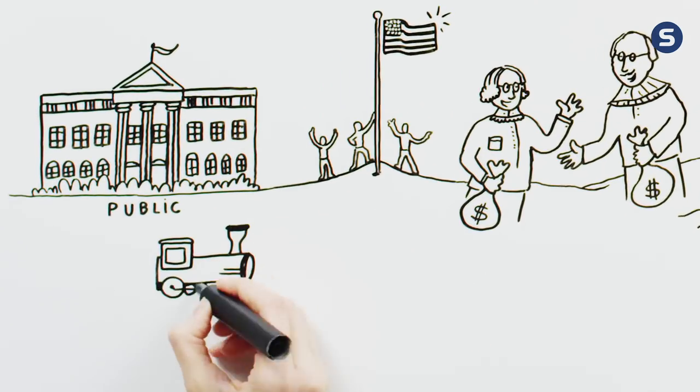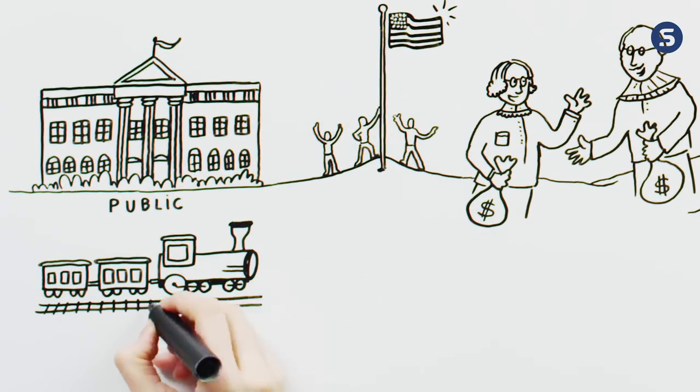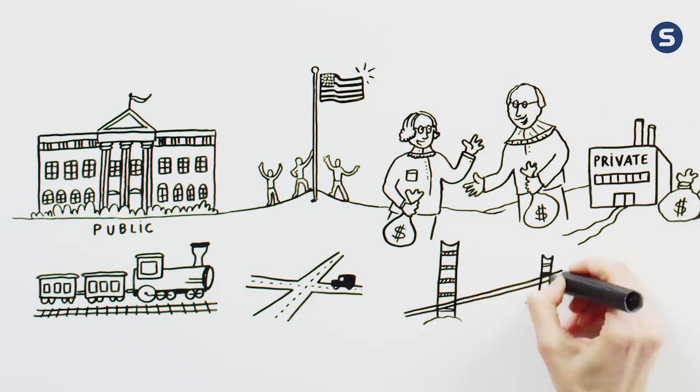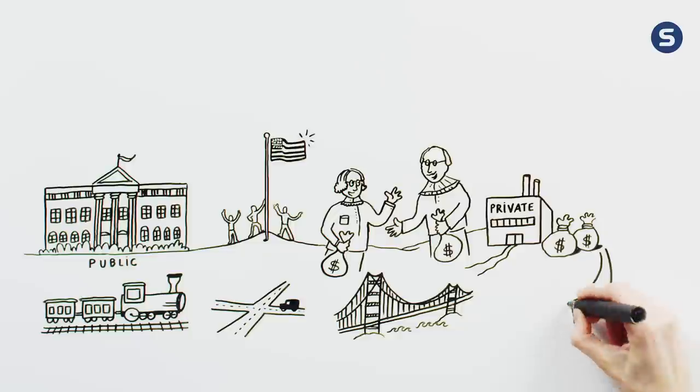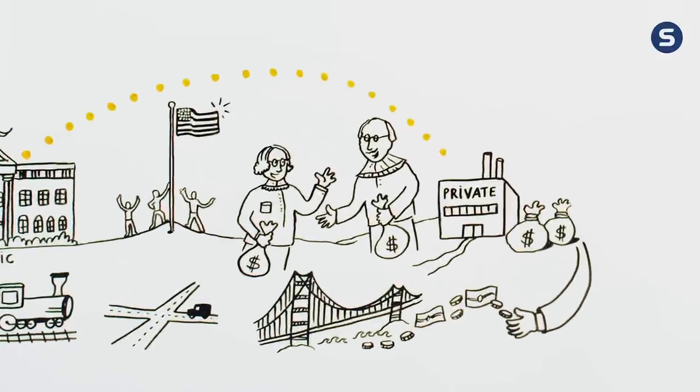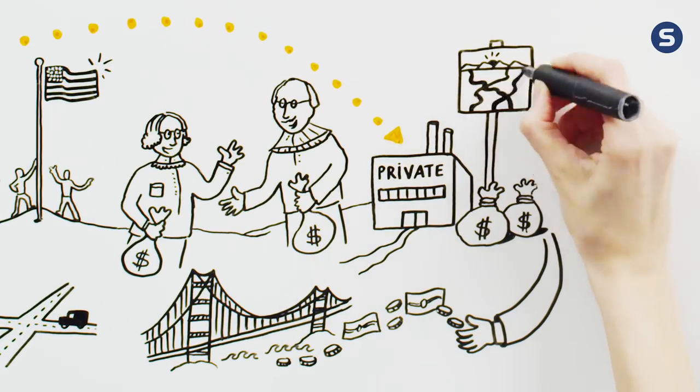Some of these projects are familiar: the Transcontinental Railroad, the Lancaster Turnpike, and the Golden Gate Bridge. These iconic projects were financed with private equity, which was essential for America as we forged such vital infrastructure.